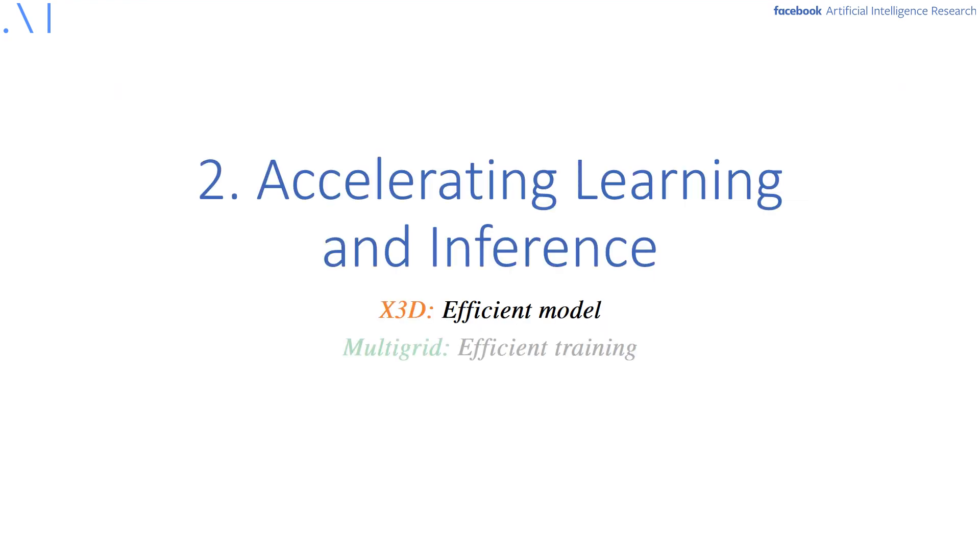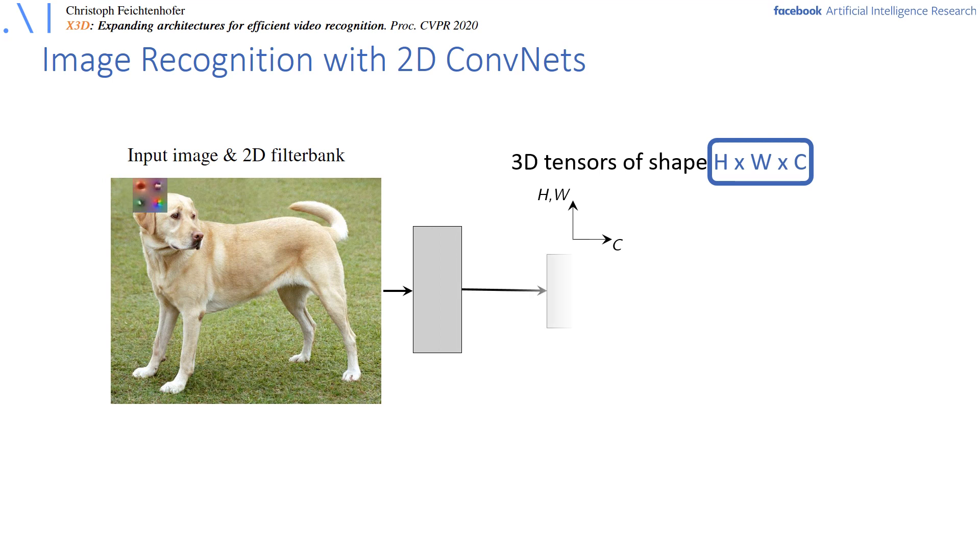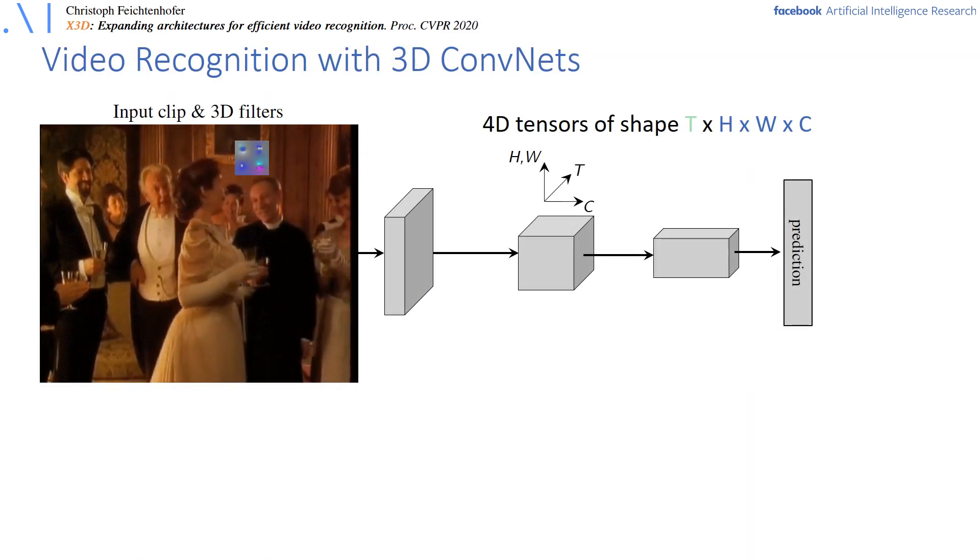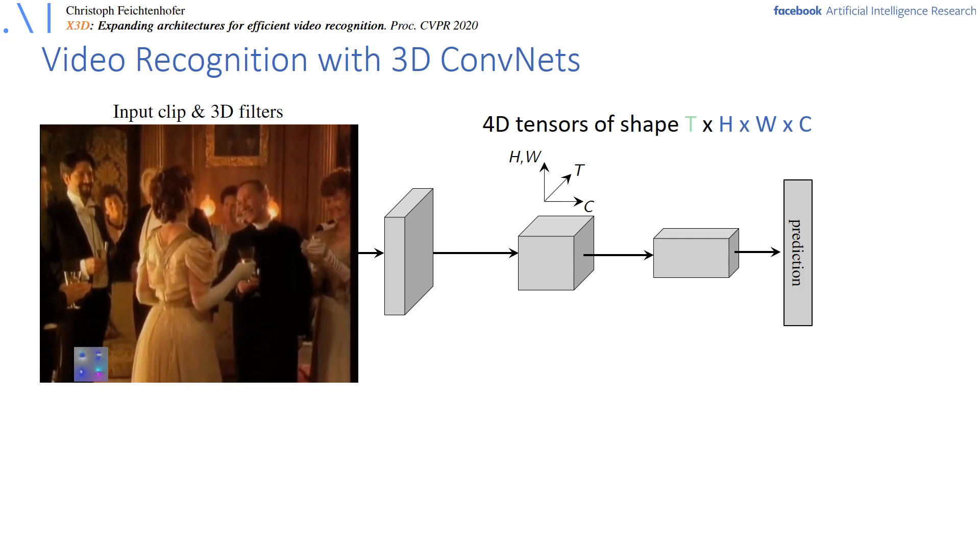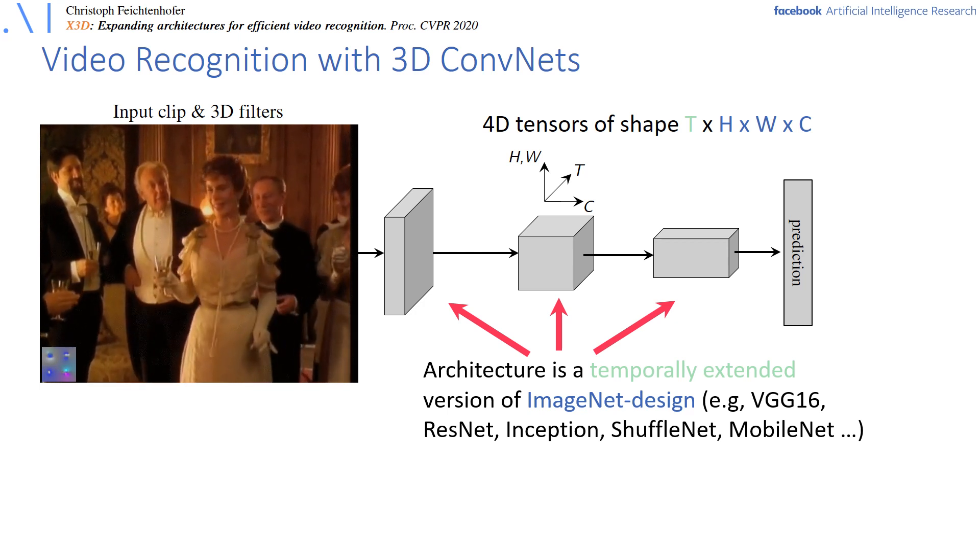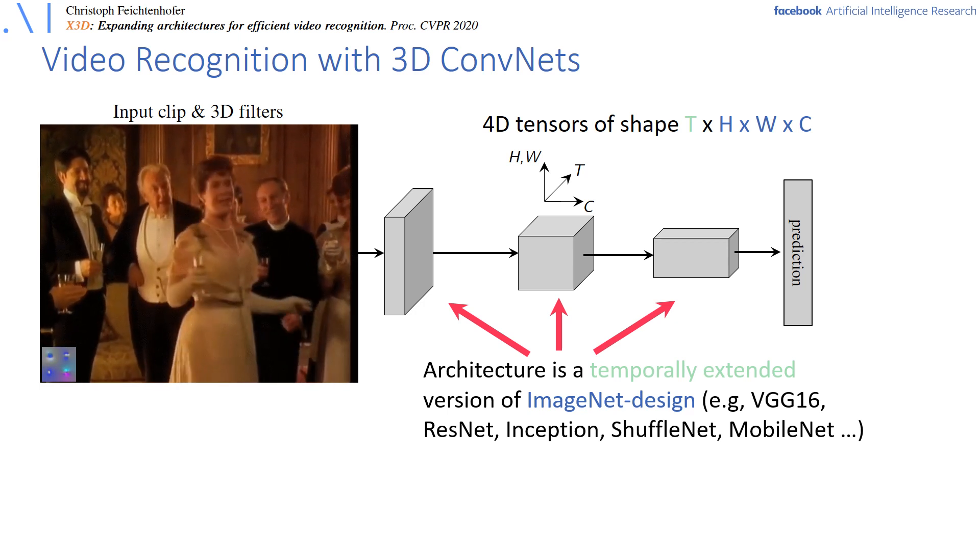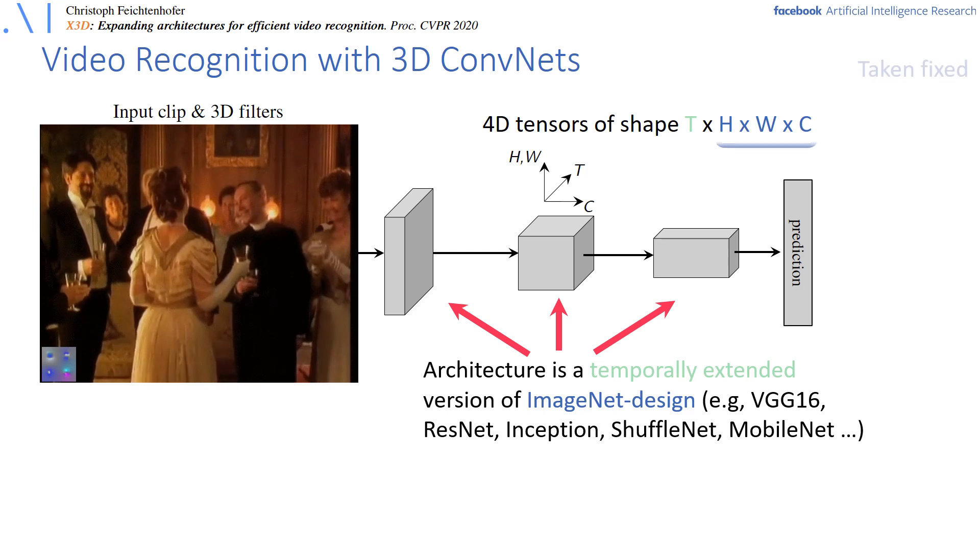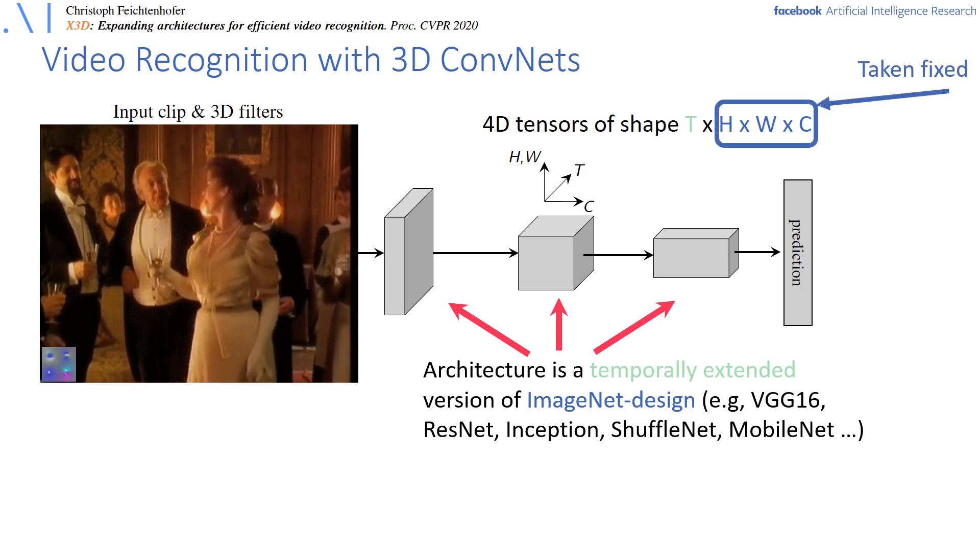First I will talk about how to increase the efficiency on the modeling side by talking about X3D. For 2D tasks such as image or object recognition, it is common to apply layers of 2D filters to input images, which results in feature tensors of size H times W times C. For video recognition, an intuitive way is to convolve an input video clip with 3D spatiotemporal filters. This is typically done by extending an image-based network by a third dimension. Basically nearly all video classification backbones are temporal extensions of ImageNet design. Therefore the H times W times C dimensions are fixed based on the ImageNet design.